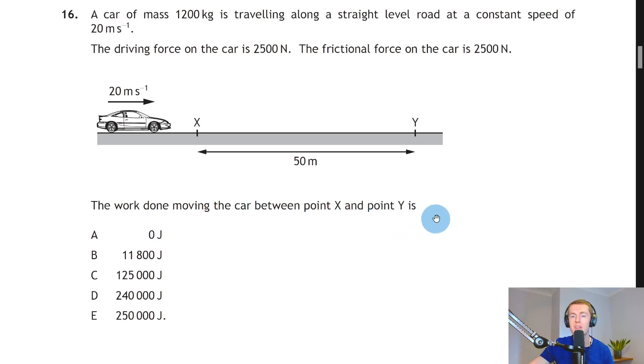This question was done pretty poorly by pupils in the year of this exam. The reason is that they thought since the frictional force was the same as the driving force, the unbalanced force was zero newtons, and therefore the force F in the equation for work done would be zero as well.